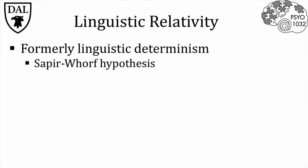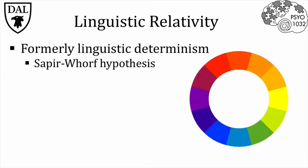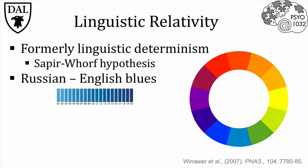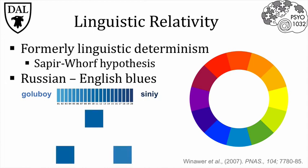Evidence to support this was mainly from comparisons of speakers of different languages. Some languages have more words in their lexicon to describe concepts like colors. Whereas English only has one word for the color category blue, Russian has two words depending upon whether the blue is light or dark. One study asked native English and Russian speakers to categorize colors. They were shown a square on the top and had to choose one from a pair shown on the bottom. For Russian speakers, when the blues were in different color word categories, they made faster discriminations, but the English speakers did not.